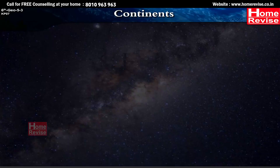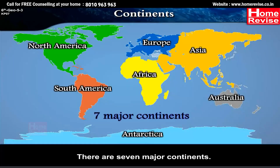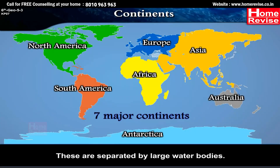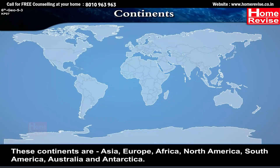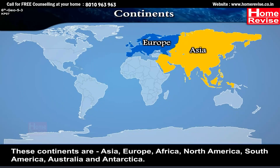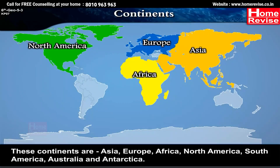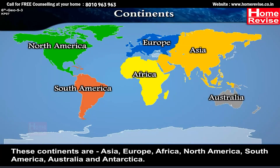Continents. There are seven major continents. These are separated by large water bodies. These continents are Asia, Europe, Africa, North America, South America, Australia and Antarctica.